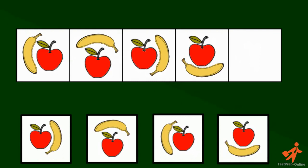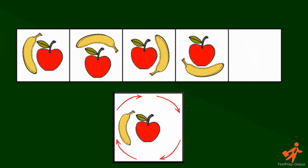Very good. The correct answer is C. If we continue the pattern with the banana moving around the apple, the banana needs to be to the left of the apple in the correct answer.